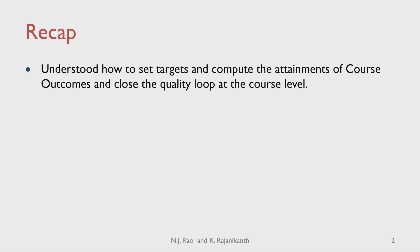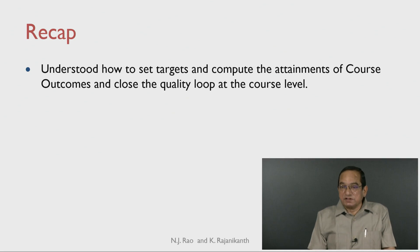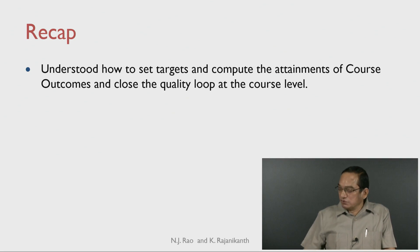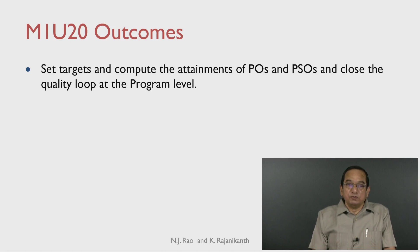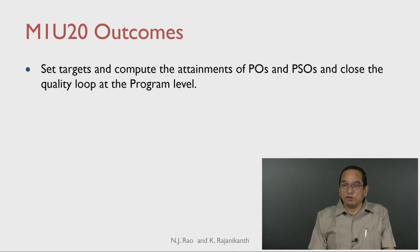Greetings, welcome to Module 1, Unit 20 on Attainment of POs and PSOs. In the earlier unit, we understood how to set targets and compute the attainments of course outcomes and close the quality loop at the course level. In this unit, we look at setting the targets and computing the attainments of POs and PSOs and closing the quality loop at the program level.